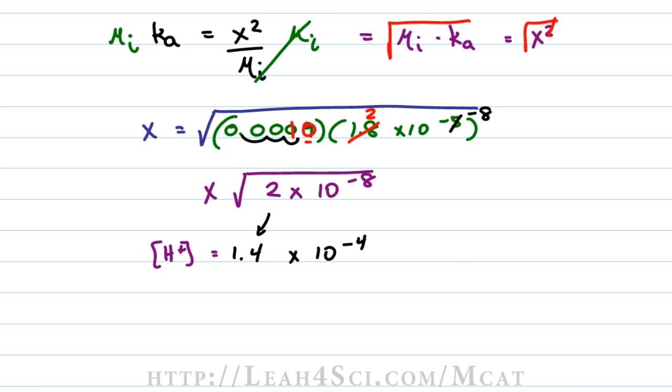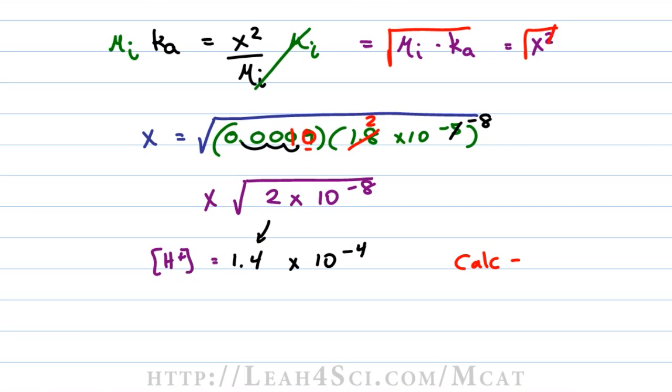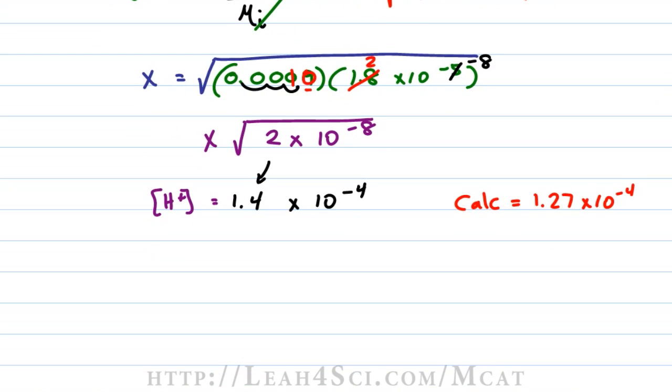Just to show you how close we are, when punching the initial numbers into the calculator I got 1.27 × 10^-4. How close is 1.4? But we're not done. We now have to do pH equals negative log of the H+ concentration which is 1.4 × 10^-4. Again we're going to round 1.4 down to 1 and the pH is approximately 4. In fact, punching this number into the calculator I got a pH that is equal to 3.896. Talk about close.